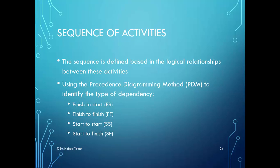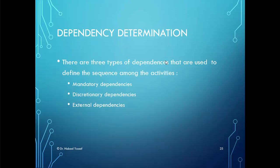The sequence of activities was explained in detail in the previous session through the network diagram and critical path calculations. It's very important to identify the type of dependency between tasks to determine when to start and end each task, which affects overlapping, duration, and resource assignment. There are three types of dependencies used to define the sequence among activities: mandatory dependency, discretionary dependency, and external dependency.